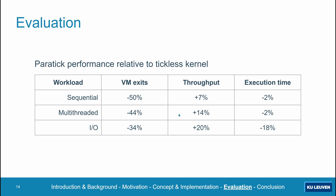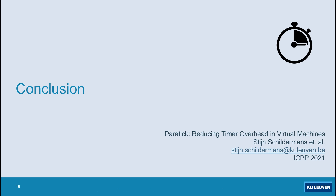Multi-threaded applications, on the other hand, benefit much more in terms of throughput, but still do not show much improvement in execution time. This is likely because most VM exits eliminated by Paratick are not on the critical path of the application, and therefore have no impact on execution time. IO-heavy workloads finally do benefit greatly both in terms of throughput and execution time.